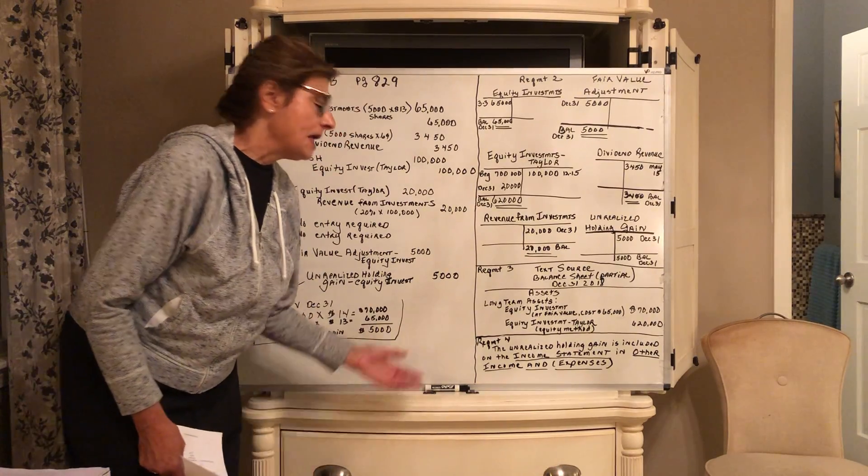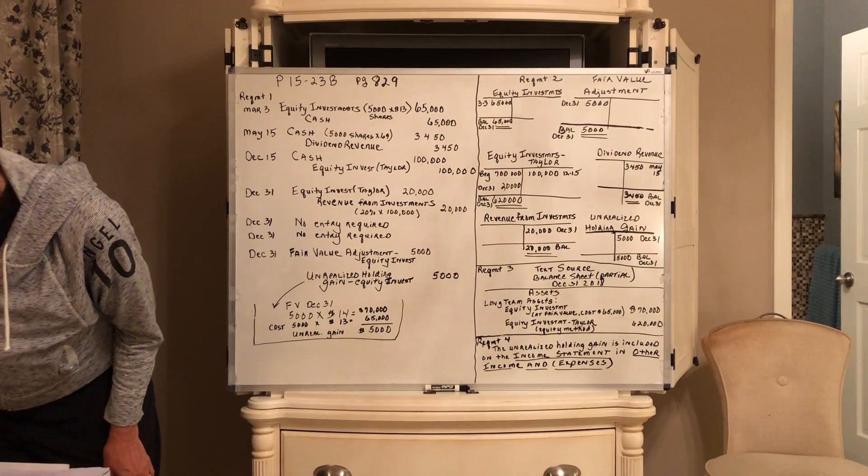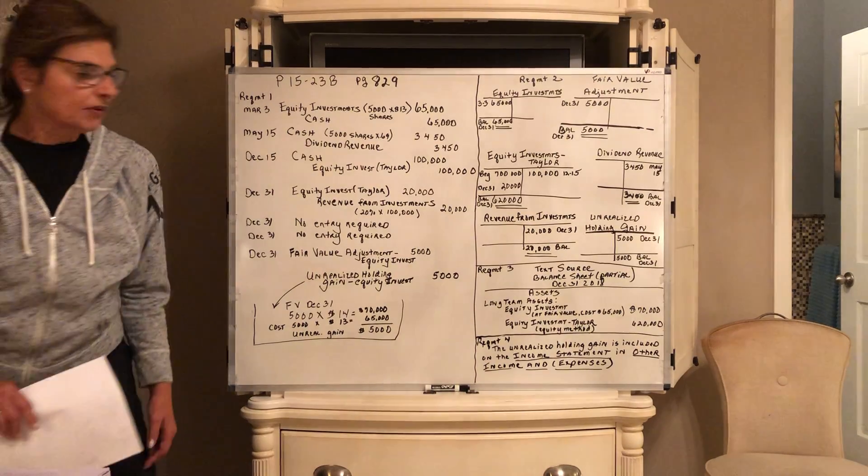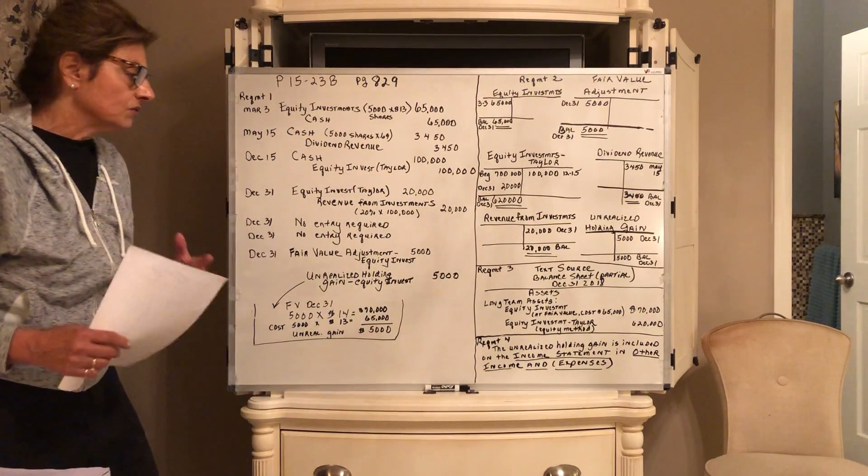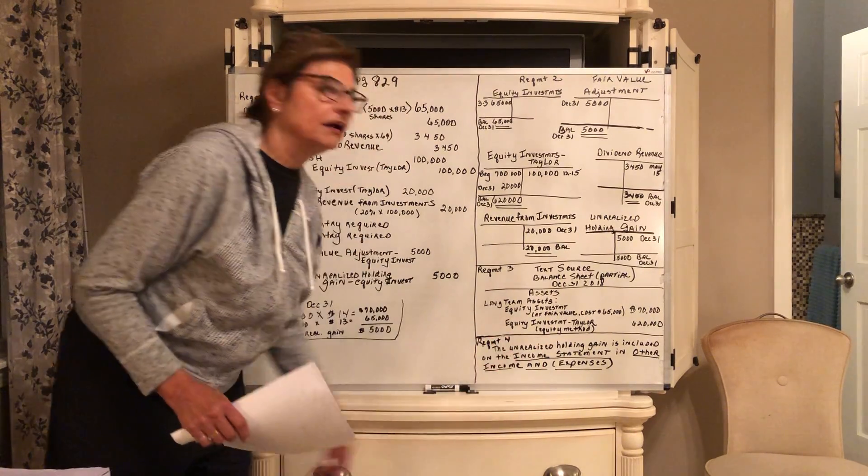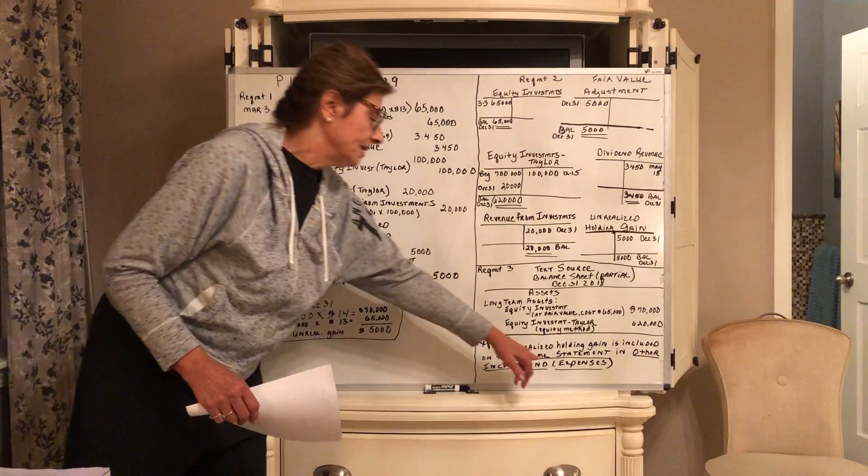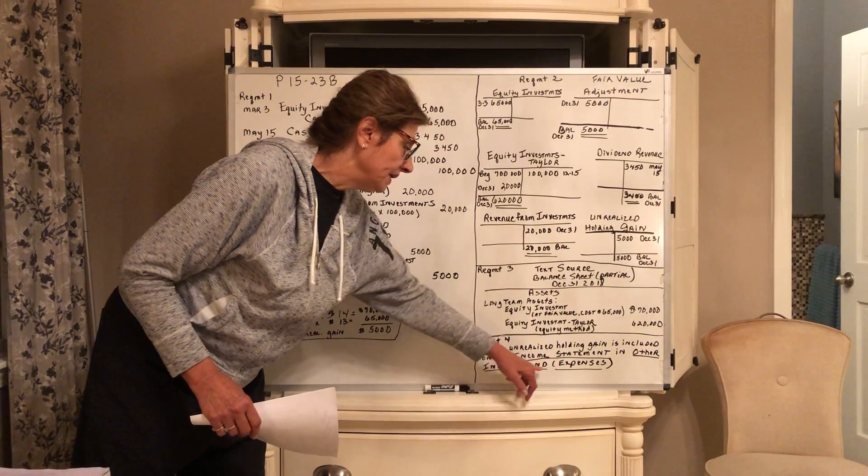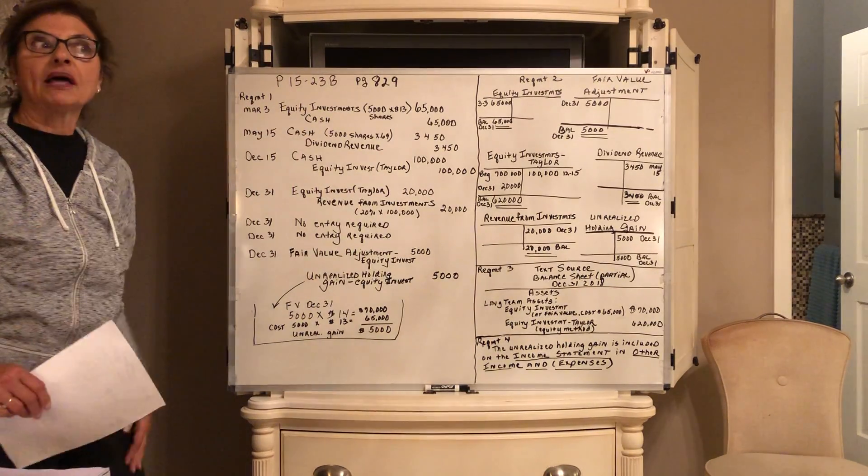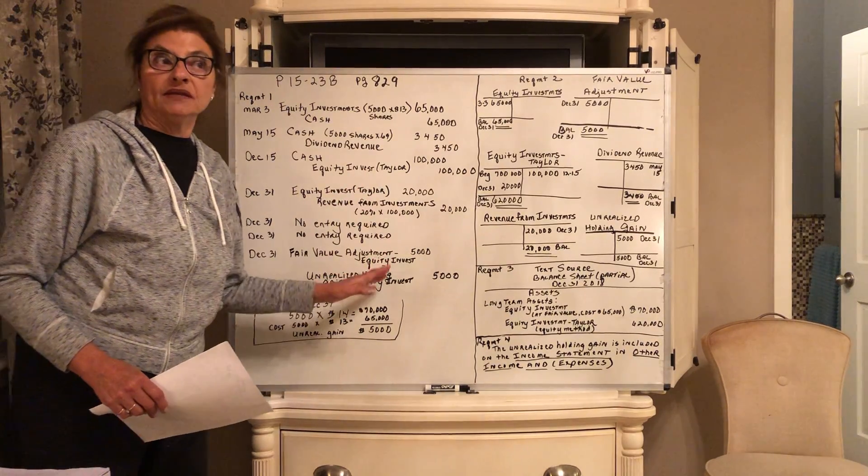I tried real hard to fit this requirement 4 in. They ask, where is the unrealized holding gain or loss associated with the Josh stock reported? Any unrealized gain or loss is included on the income statement in other income and expenses. If it was income, it would be a plus in other income. Because this is a gain, it would be a plus. If it was a loss, it would be a minus in that section at the bottom of the income statement. That would be true for all our equity investments.